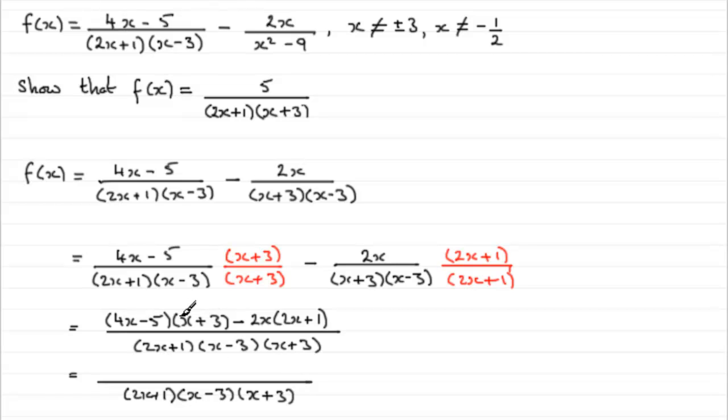But if you expand out the top and simplify you're going to get 4x squared. So I put that down. 4x squared and then you get 12x minus 5x, and then minus 5 times 3 is minus 15.